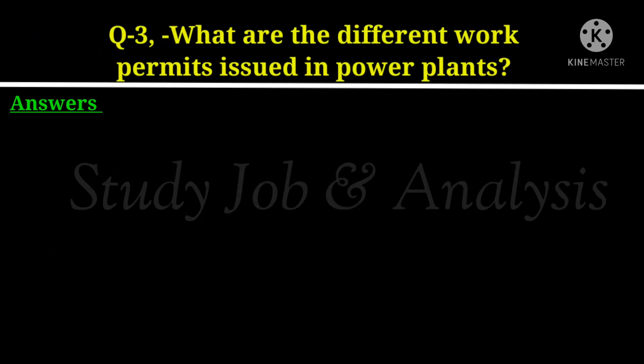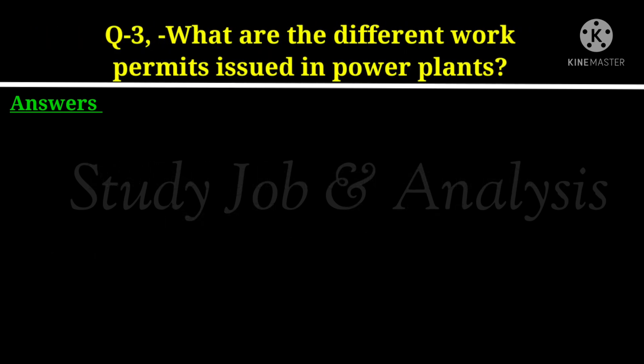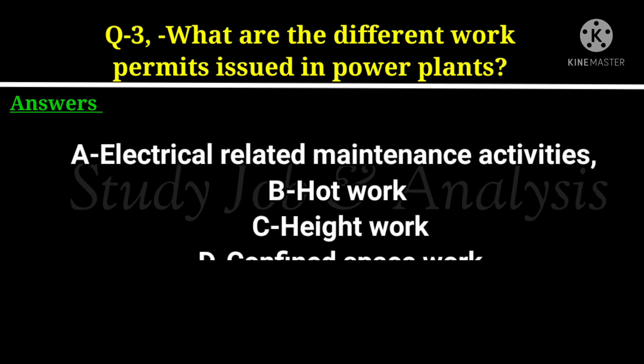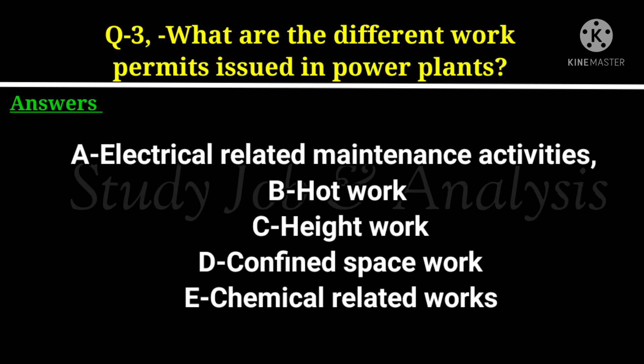Question number 3: What are the different work permits issued in power plants? A. Electrical related maintenance activities. B. Hot work. C. Height work. D. Confined space work. E. Chemical related works.